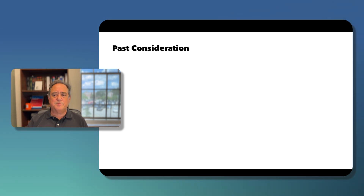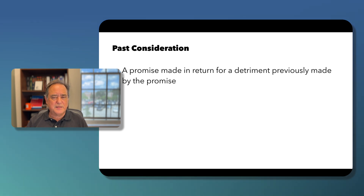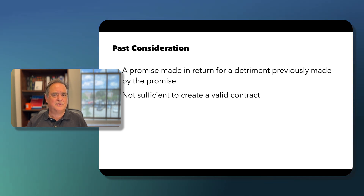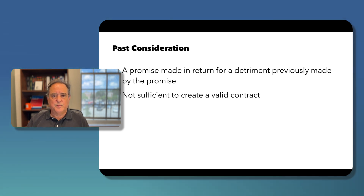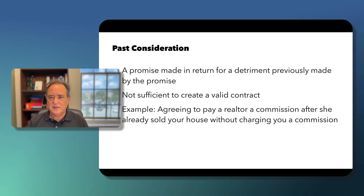Past consideration is a promise made in return for a detriment that has already taken place, and it is not sufficient to create a valid contract. For example, if a realtor friend sells your house without taking a commission, and afterward you promise to pay them a commission, that promise is unenforceable — it's past consideration because the service was already performed.